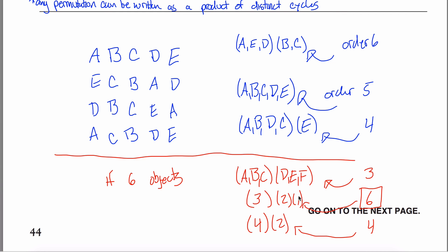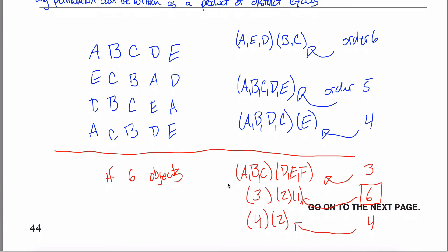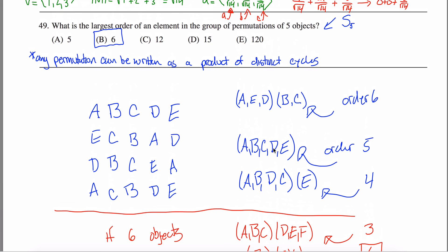This is related to something called Landau's function, which takes the number of objects as input and returns the maximum order of an element in that symmetric group. For this GRE problem, the answer is 6 — the LCM of 2 and 3, coming from a 3-cycle and a 2-cycle partitioning the five elements.